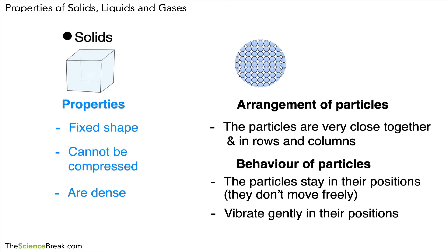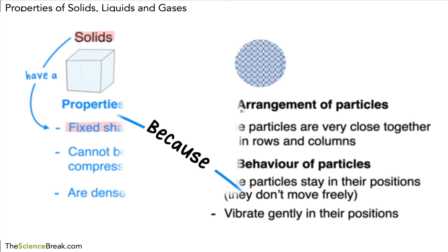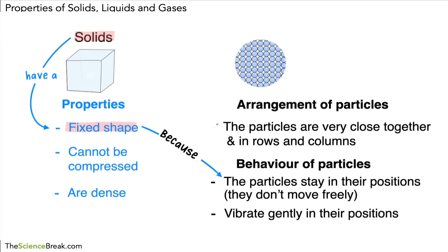Let's make a sentence to explain a property. We can say: solids have a fixed shape because the particles stay in their positions. You can see that we're linking the property of the solid to the way the particles behave — sometimes it's the way the particles are arranged. It's very important to use the word 'because' to link the property to the behavior of the particles. Solids have a fixed shape because the particles stay in their positions.